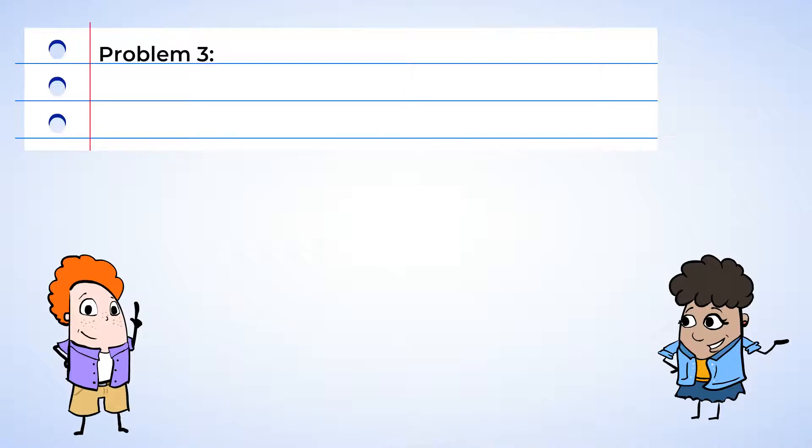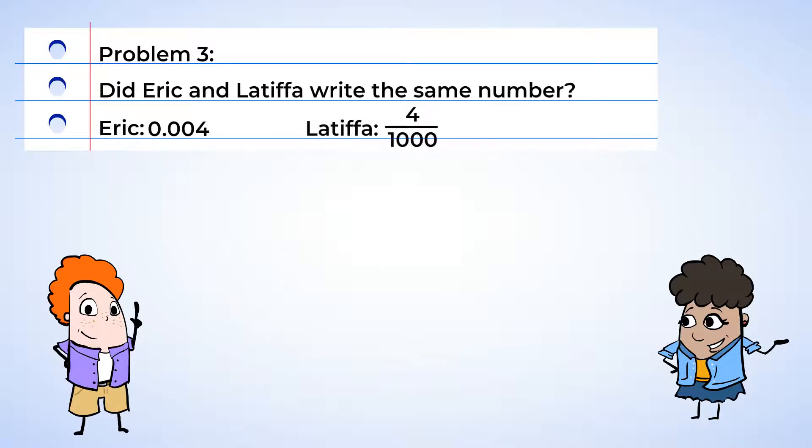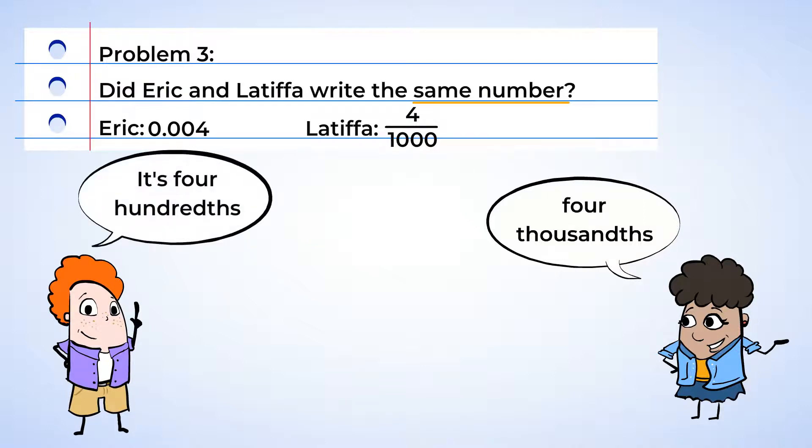Ooh, and it's Eric and Latifah. Seems like they're having a little dispute about decimals and fractions. Looks like they may need our help. Now, Eric wrote the following decimal, and Latifah wrote the following fraction. Did Eric and Latifah write the same number? Latifah says that they wrote the same number, four thousandths, but in different forms. Eric doesn't seem to agree. He says that his number is four hundredths and Latifah's is four thousandths. Well, who's right?